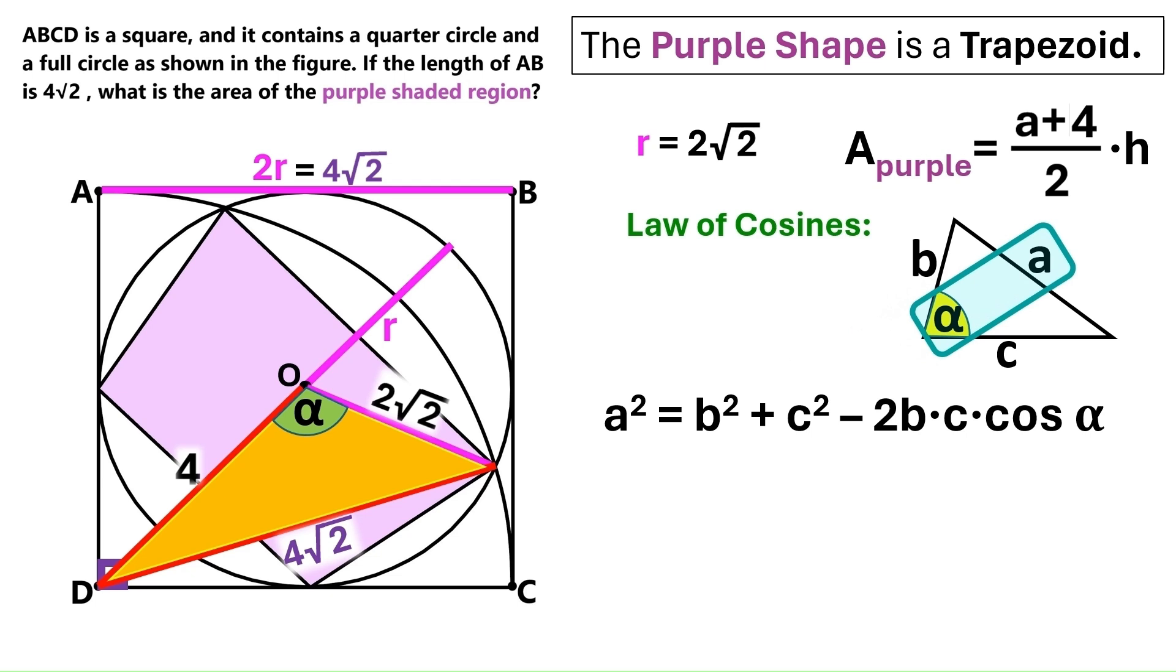Now we can use this formula to calculate the cosine of any of its angles. This A is the side opposite the angle we want to find. We're trying to find the cosine of this angle. So this one is the side A. And we're gonna replace this A squared with 4 times root 2 squared, which equals 32.